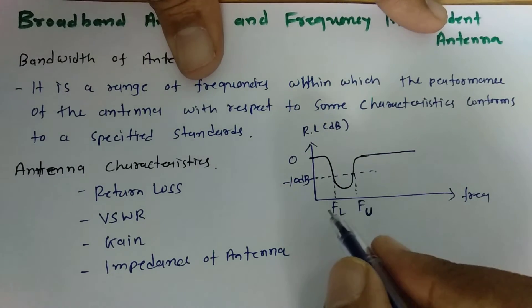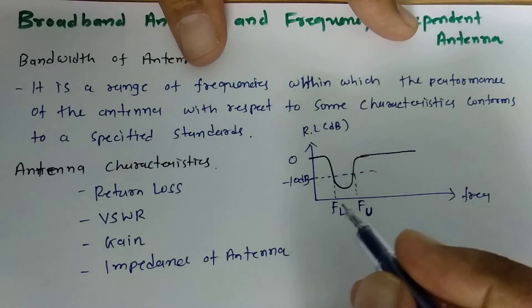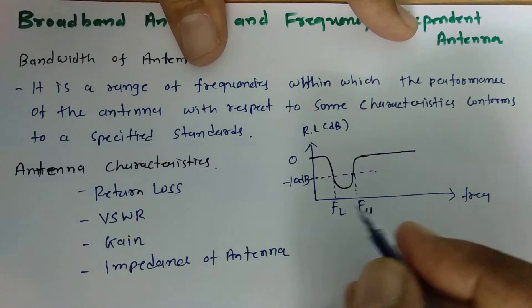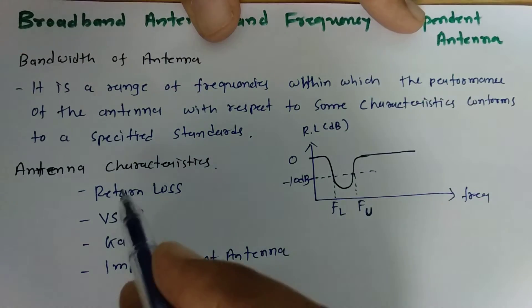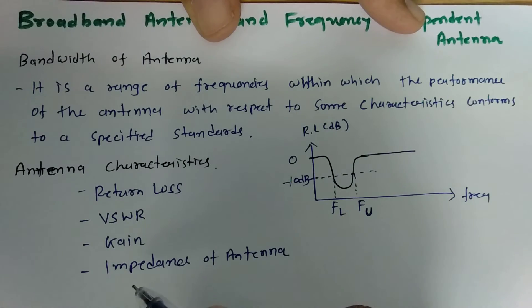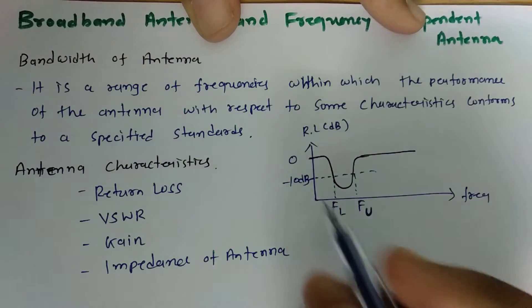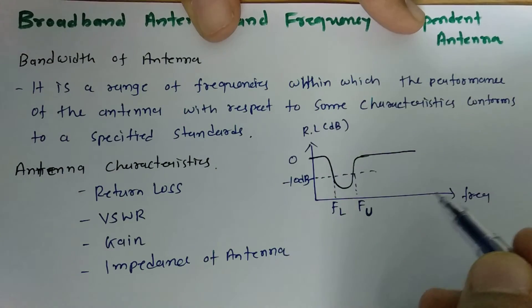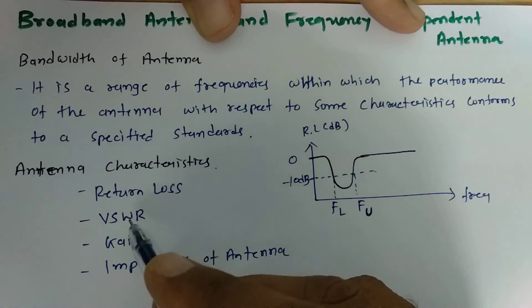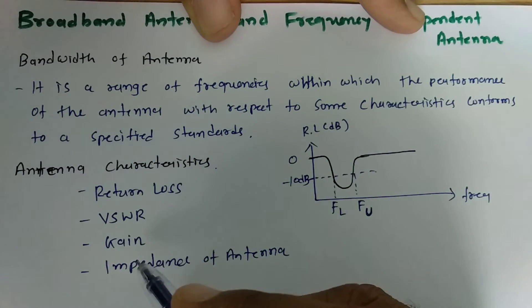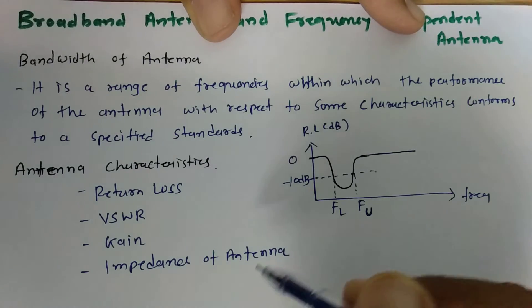By these two frequencies we can identify the bandwidth of the antenna. In terms of frequency, it will be upper cutoff frequency minus lower cutoff frequency. There are other characteristics that can define bandwidth of an antenna. I used the microstrip antenna as an example; it could also be calculated with respect to VSWR, gain, or impedance of the antenna.